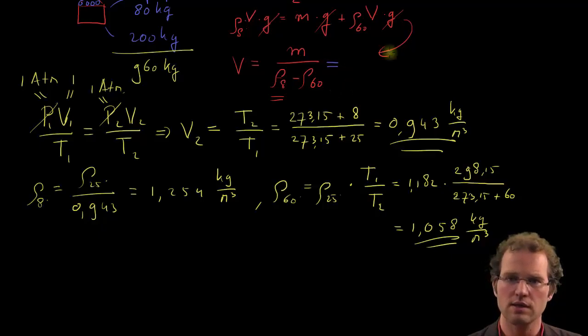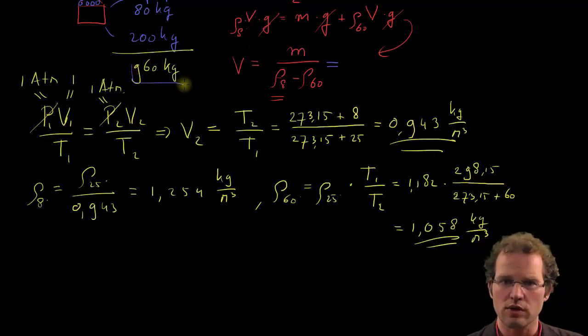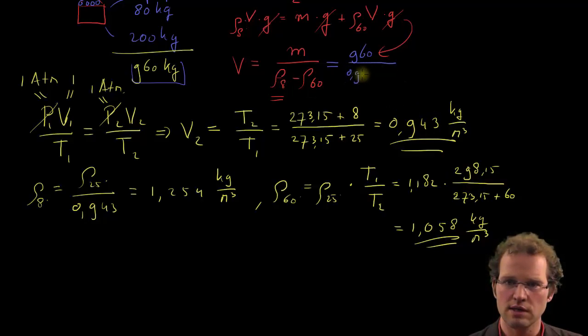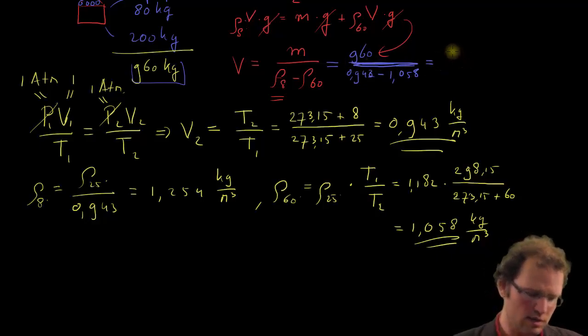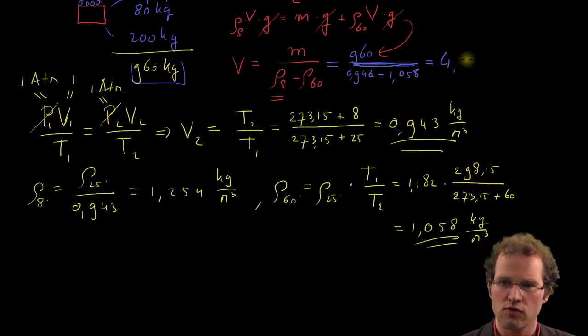So let's see if we can fill this one in. We started with 960 kilograms, and we now have the numbers we need here, the density of air at 8 degrees centigrade, and we have to subtract here the density of air at 60 degrees centigrade. There we are. And we arrive at the volume of 4,905 cubic meters. That's our answer there.